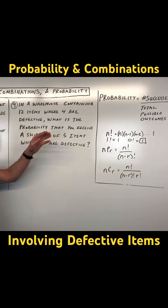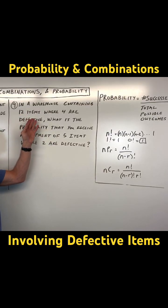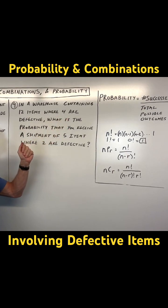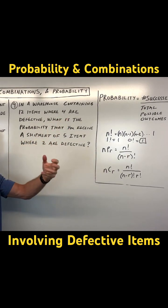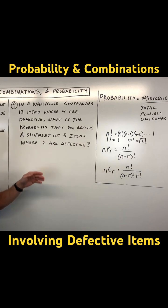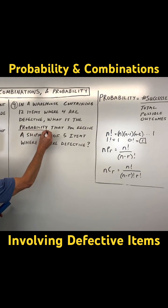So if there's 12 items total, that means there's eight good and four bad, right? And you're receiving a shipment of five items, and it wants to know what is the probability.